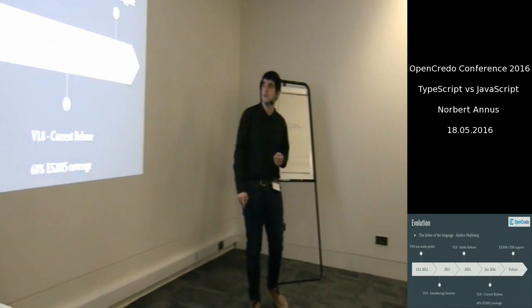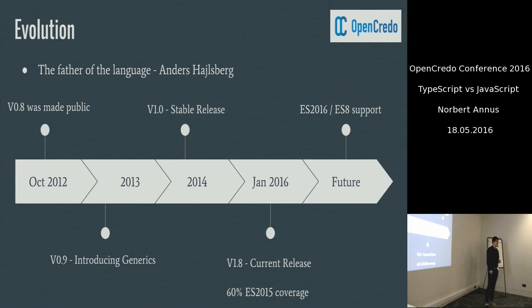Let's have a look at the evolution pipeline of the language. After two years of internal development, in which the father of C#, Anders Hejlsberg, was involved, the language was made public in 2012.